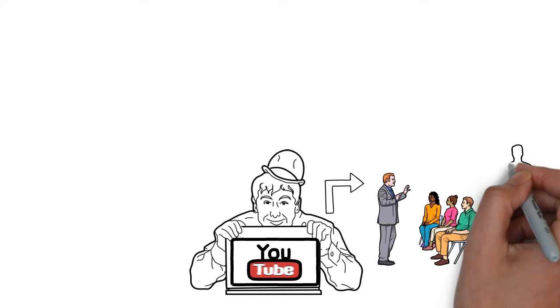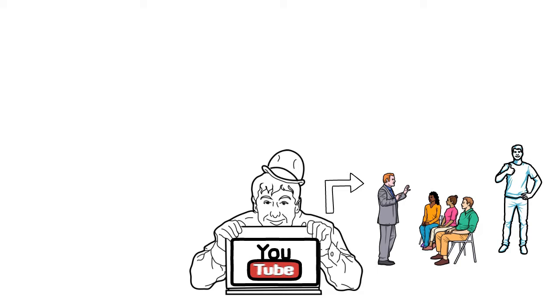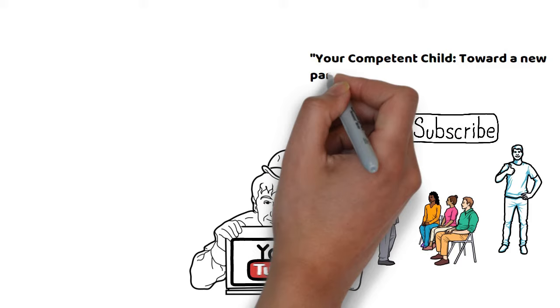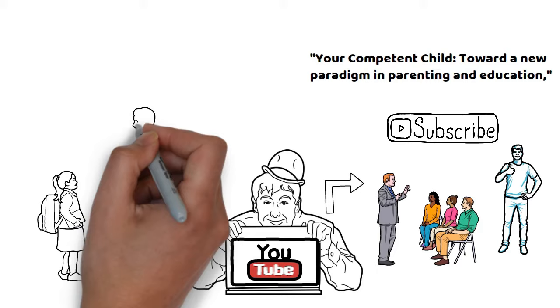Hi and welcome to our channel, a place of inspiration for those who constantly strive to become a better version of themselves. If you want more content like this, please subscribe. Today we will talk about a book summary: Your Competent Child - Towards a New Paradigm in Parenting and Education by Jasper Juul.